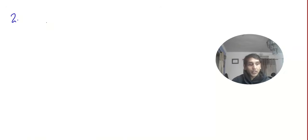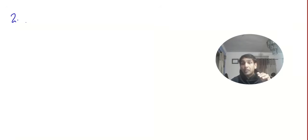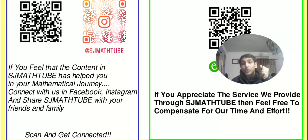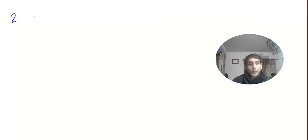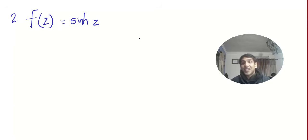Now let's go to question number 2. If you feel confident, pause the video and try it yourself. I will also give 2–3 practice questions at the end of the video. This next question is super important: f(z) = sinh(z). In the last video we did sin(z), but here we have the hyperbolic sine. These are sometimes called the drunken mathematician's trigonometric functions.